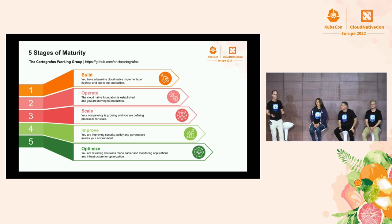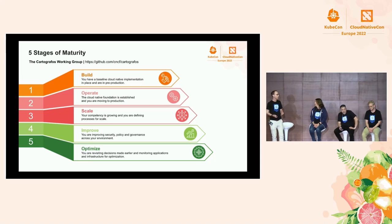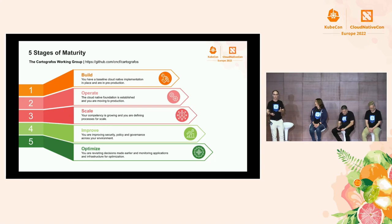Level three is for scaling out — this is where the organization is committed and well on its cloud-native journey. Level four is Improve, where policy, process, and governance are really in place. And with level five, where we optimize, we're really looking to further incorporate developments as the cloud-native landscape further matures and grows, and really looking to cast our eyes into the future.